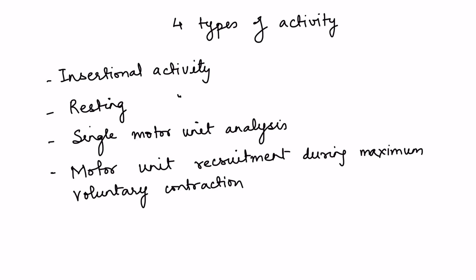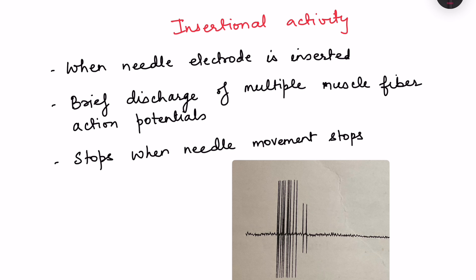In EMG we get four different types of recording: first is insertional activity, recorded when we insert the electrode into the muscle; second is resting activity; third is single motor unit analysis; and fourth is motor unit recruitment, recorded during maximum voluntary contraction. Insertional activity appears as a brief discharge of multiple muscle fibers because they are stimulated by needle insertion, generating action potentials. This activity stops when needle movement stops.